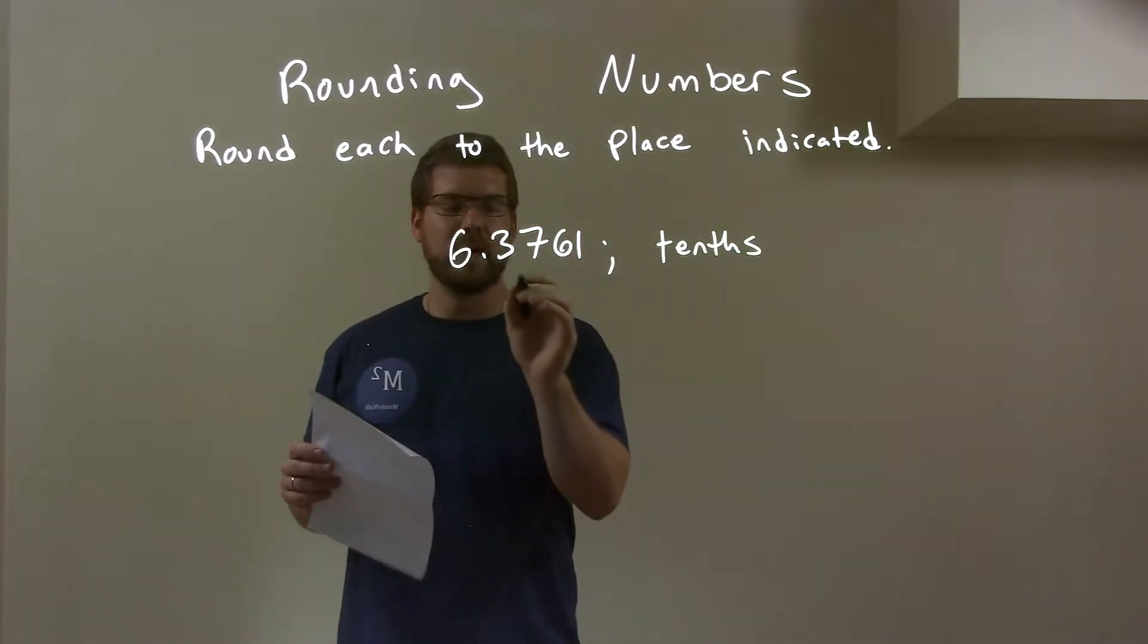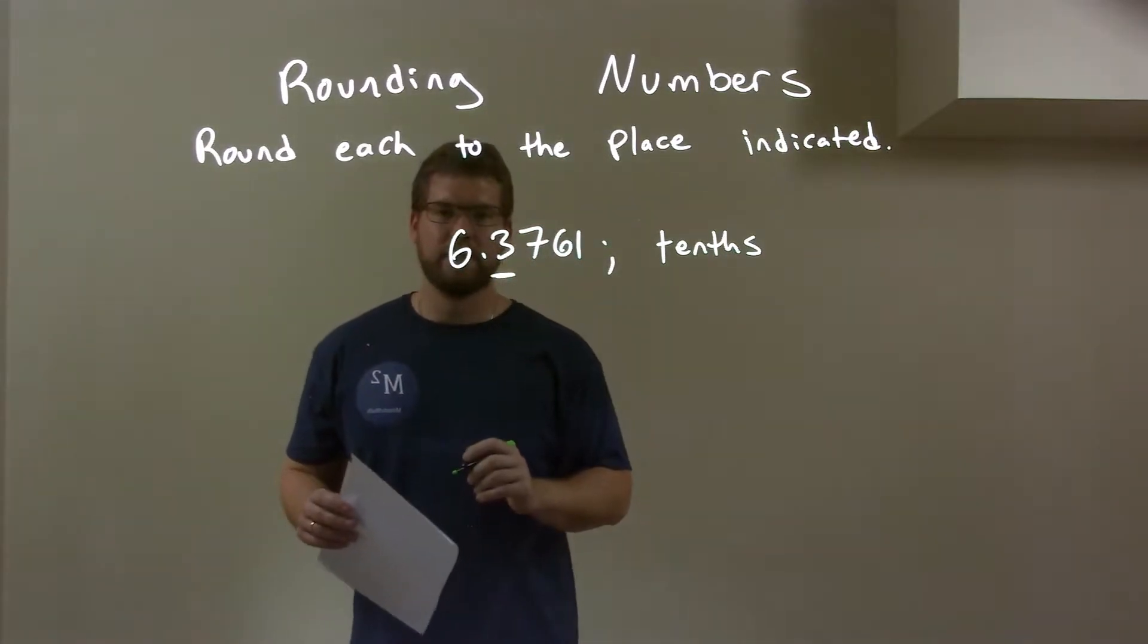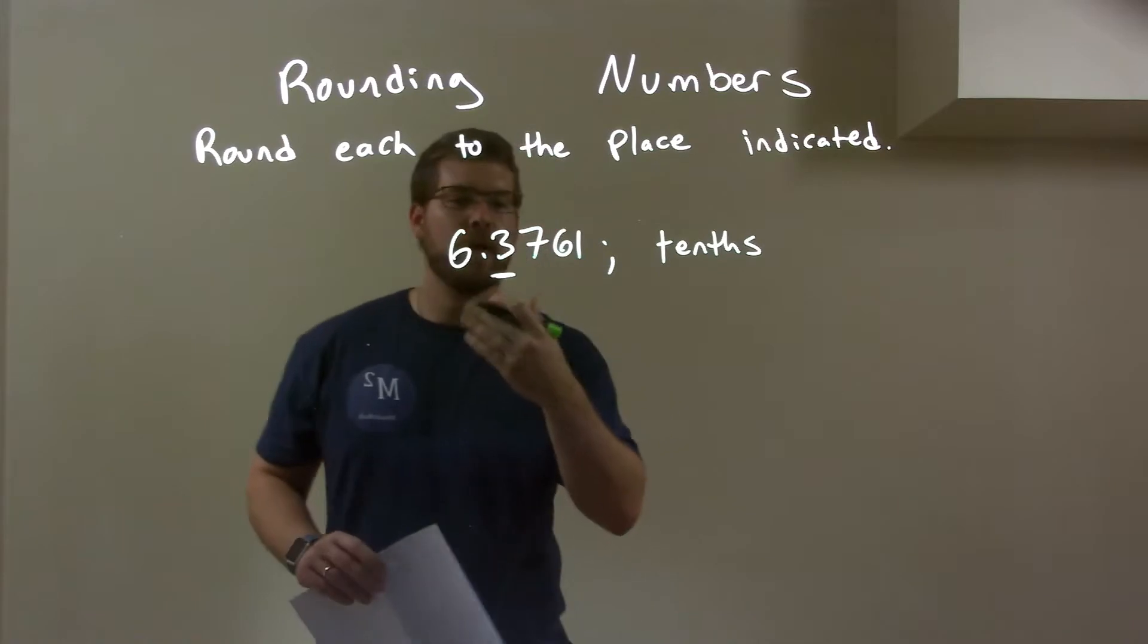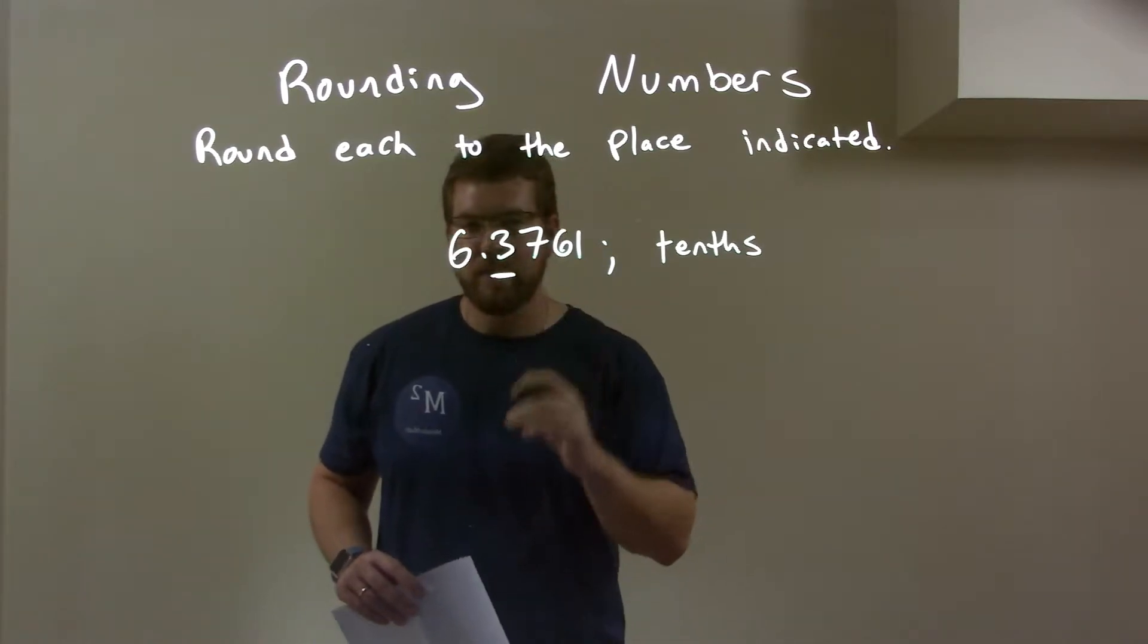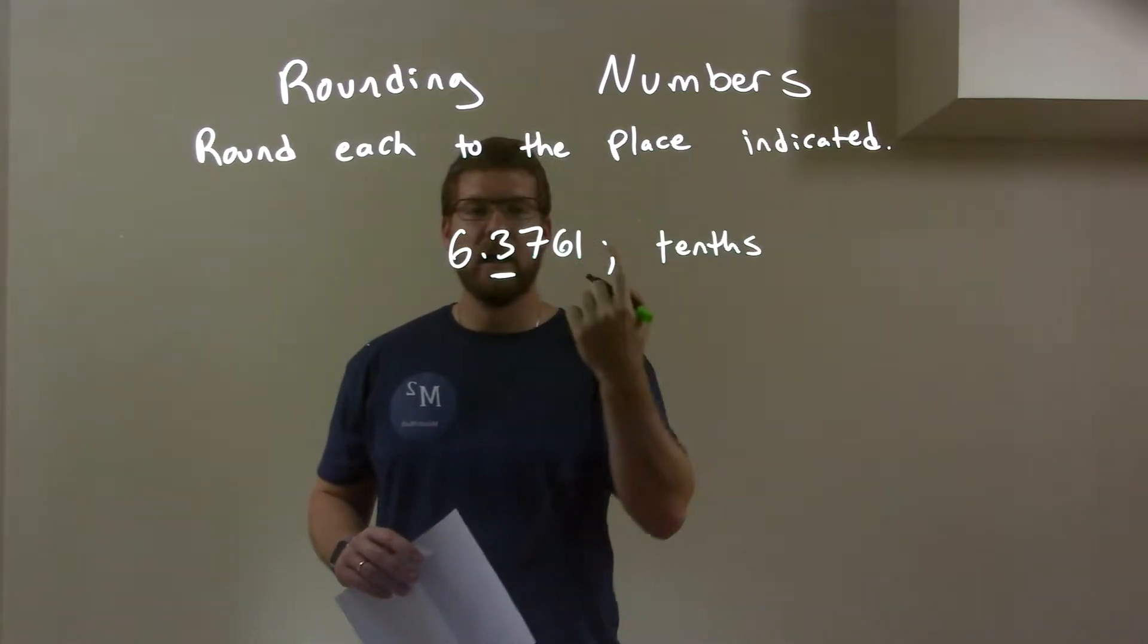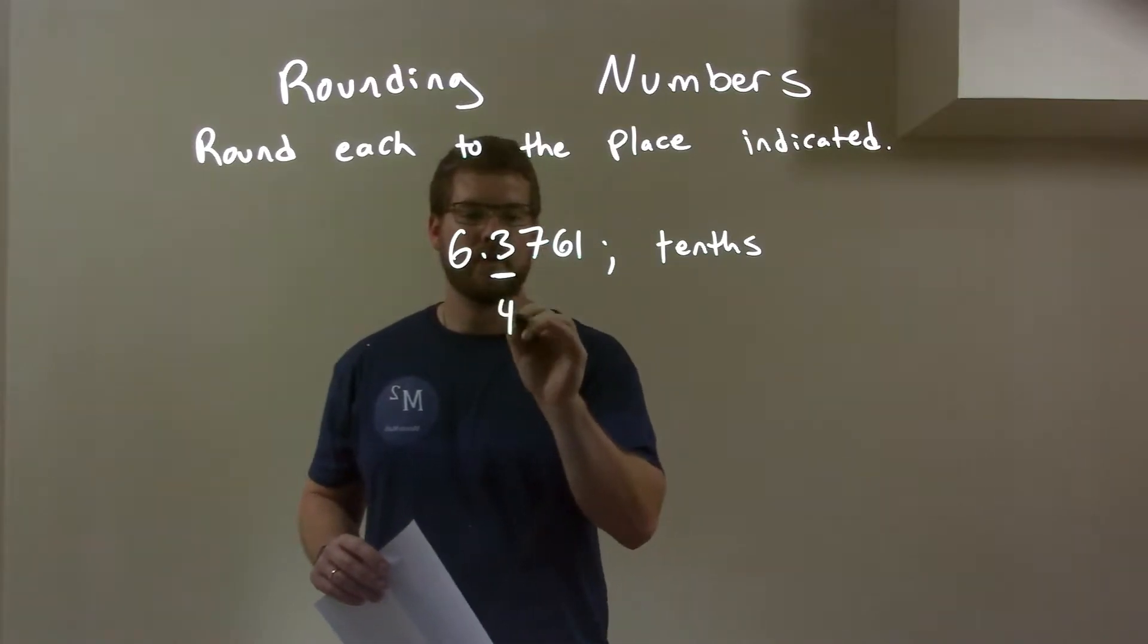Well, the tenths place is right here where that 3 is. So I look to the right. To the right of the 3, I see a 7. The 7 is between 5 and 9. That causes the 3 to round up to be a 4.